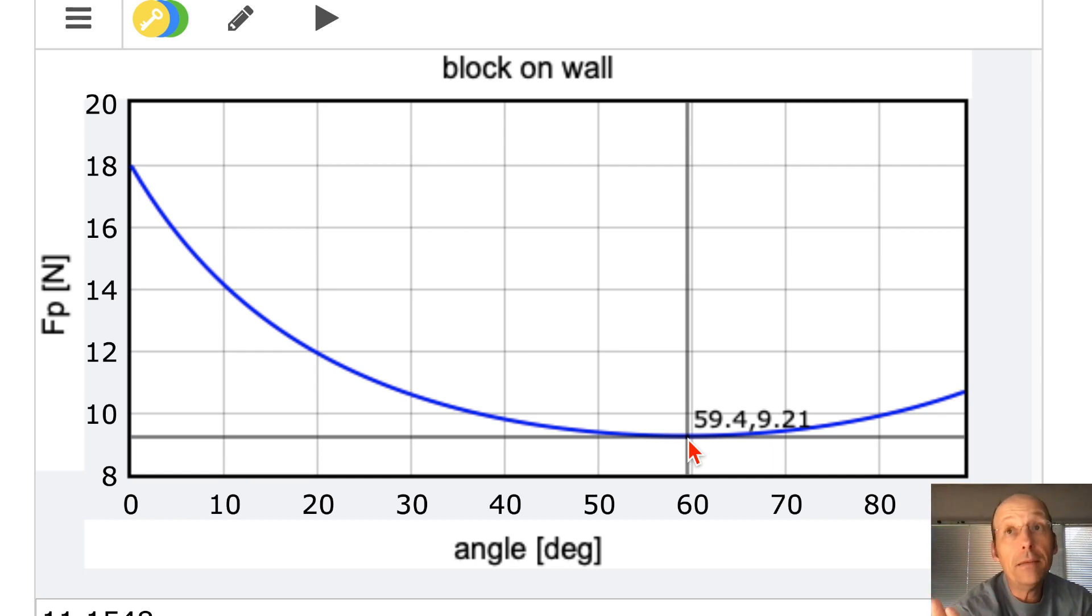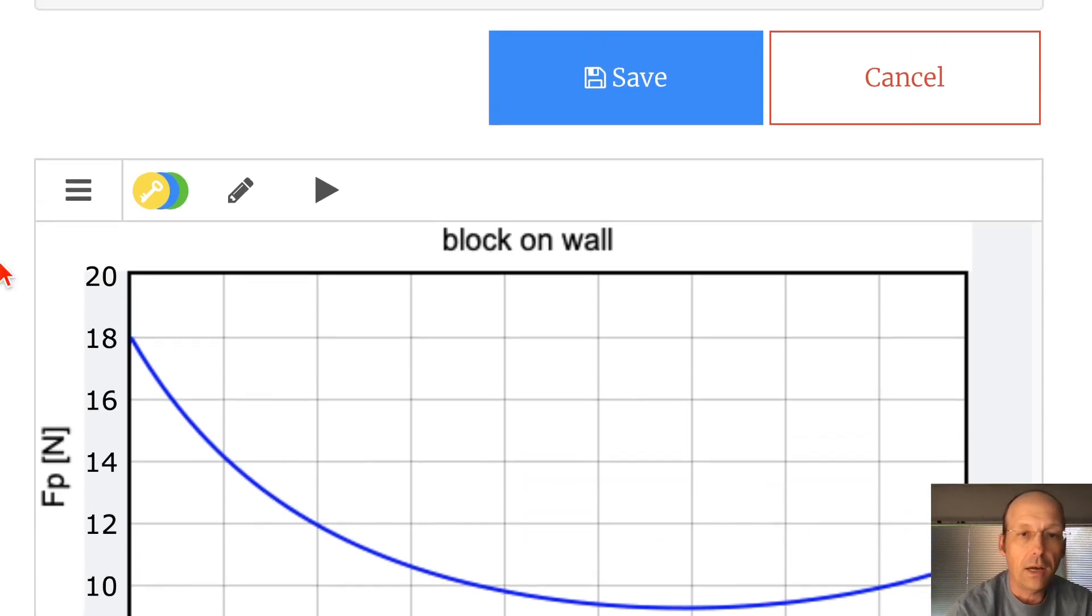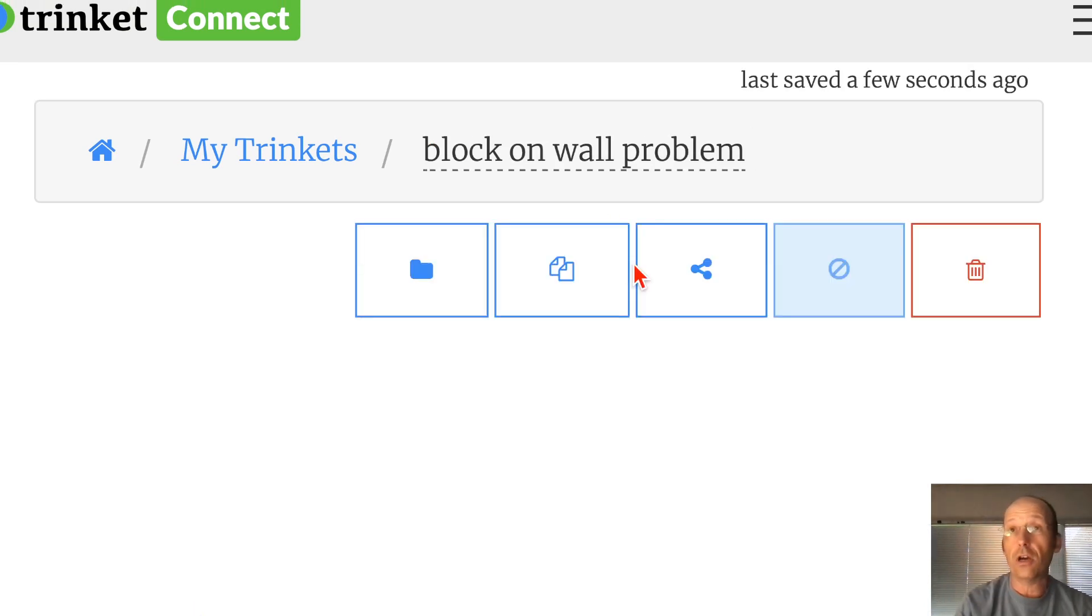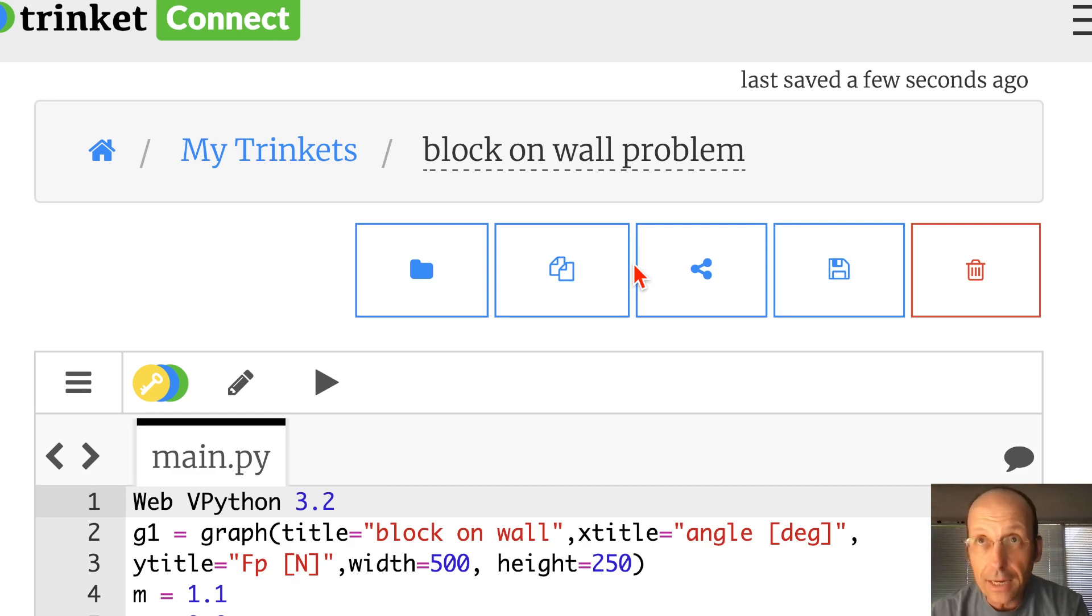So I'll give you this Python code. Let's save this. Give it a name. And I'll put a link down below. Block on wall problem. And if you want to play with it, if you click that link, you don't even need to log in. You can change the code and rerun it. And you can't break it because it's my code and it will never permanently change unless you copy it and use it for your own, which you're welcome to do. Okay. Hope that helped. Hope that was fun. I had fun. I had fun.